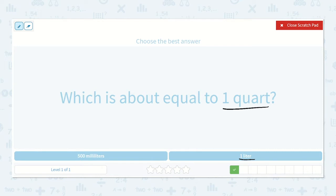Because there are 3.78 liters in a gallon. So both of these are pretty close to being a quarter of a gallon. So I would say one liter.